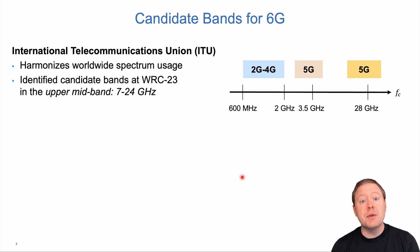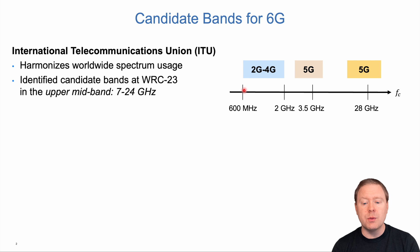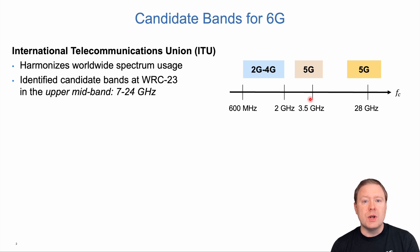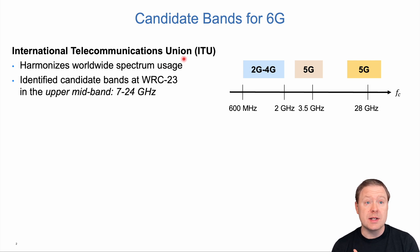When it comes to 6G, people have had a number of different opinions in the past about what frequency bands would be used. We know that 2G to 4G were operating in certain bands, and 5G had two different designated bands. But most of the deployment has been in the lower mid-band, around 3.5 GHz. We have the International Telecommunications Union, ITU, that harmonizes the worldwide spectrum usage.